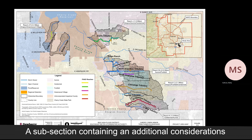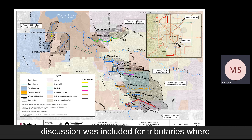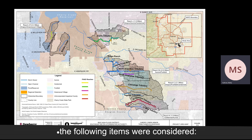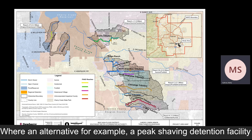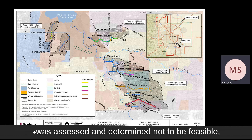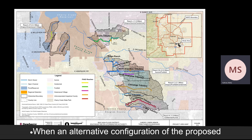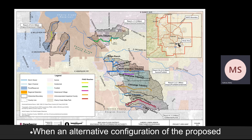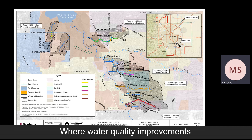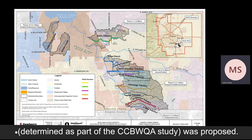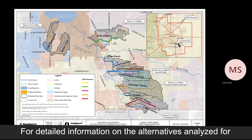A subsection containing an additional considerations discussion was included in the alternatives analysis for tributaries where the following items were considered: where an alternative, for example a peak shaving detention facility, was assessed and determined not to be feasible; when an alternative configuration of the proposed improvements was identified but not evaluated; or where water quality improvements determined as part of the Cherry Creek Basin Water Quality Authority study are proposed.